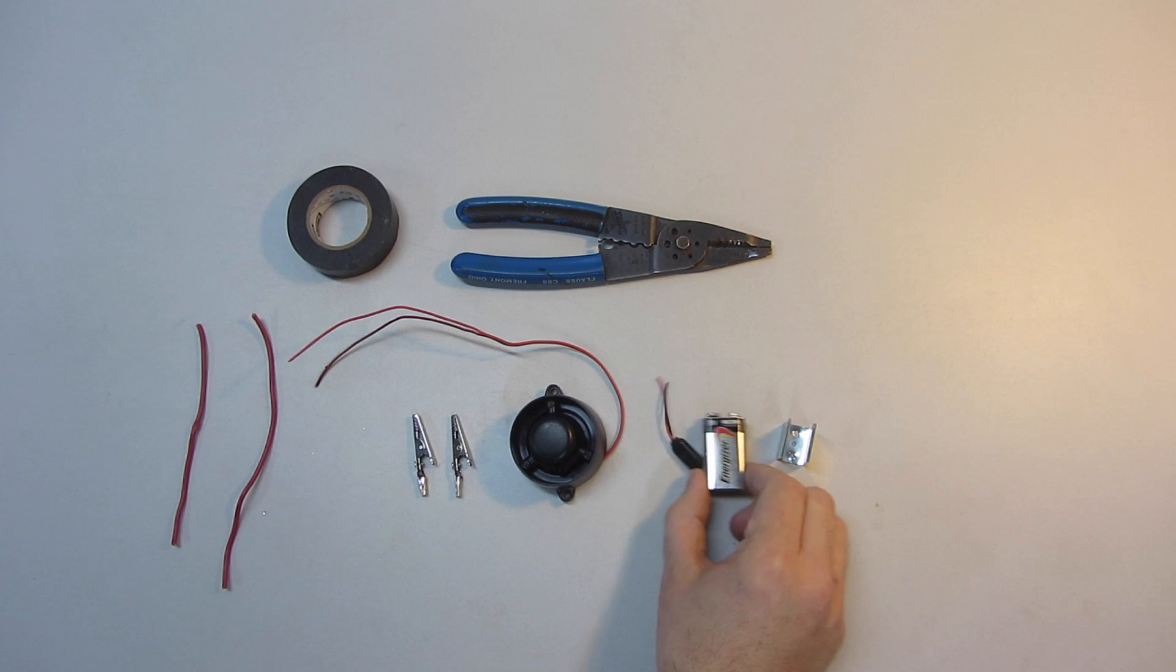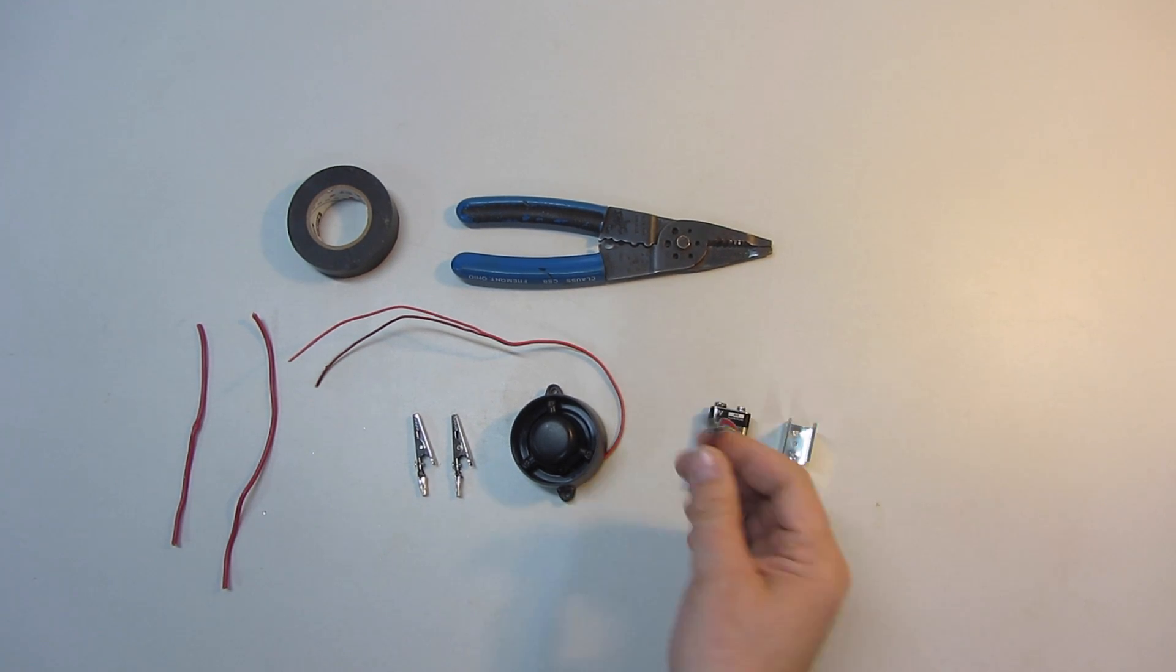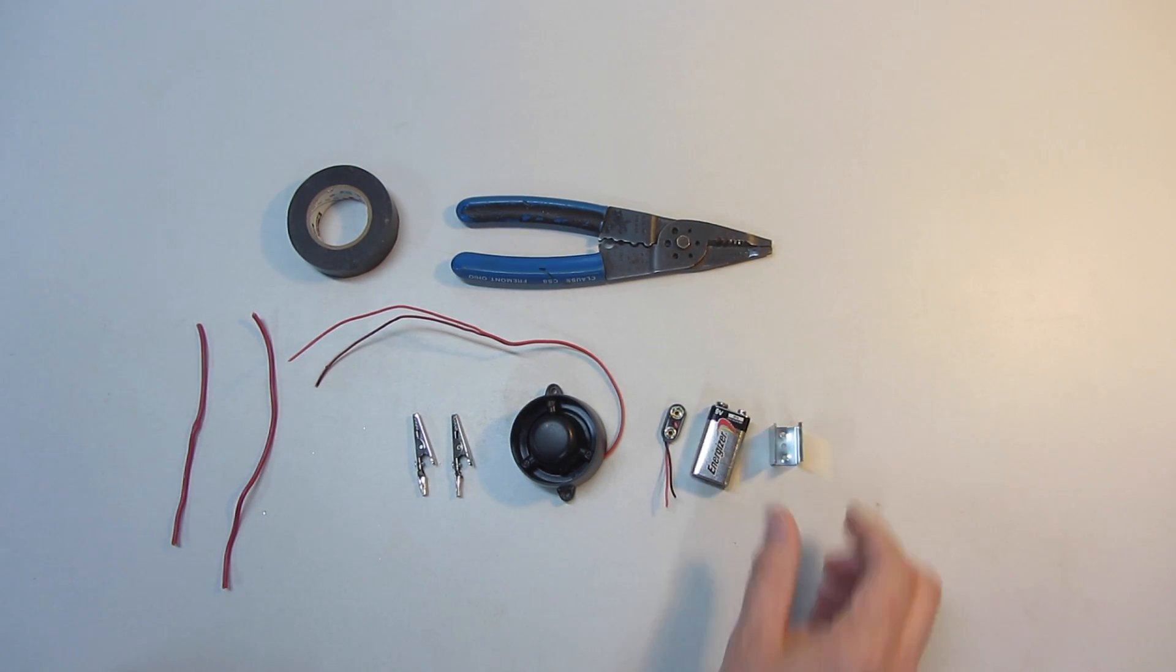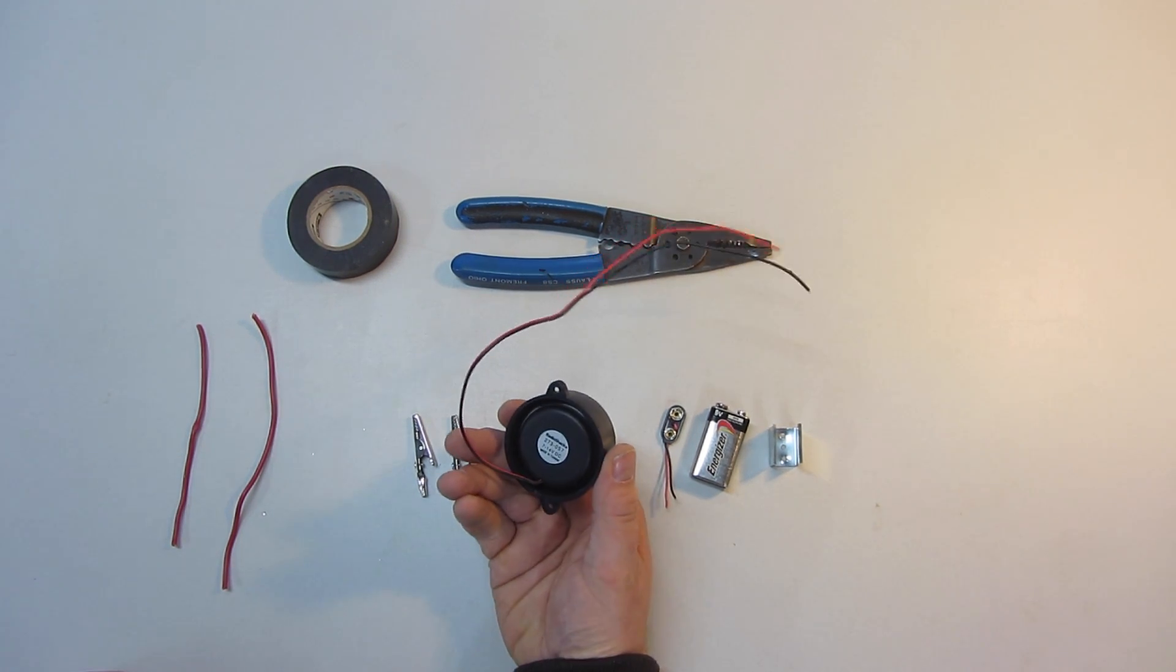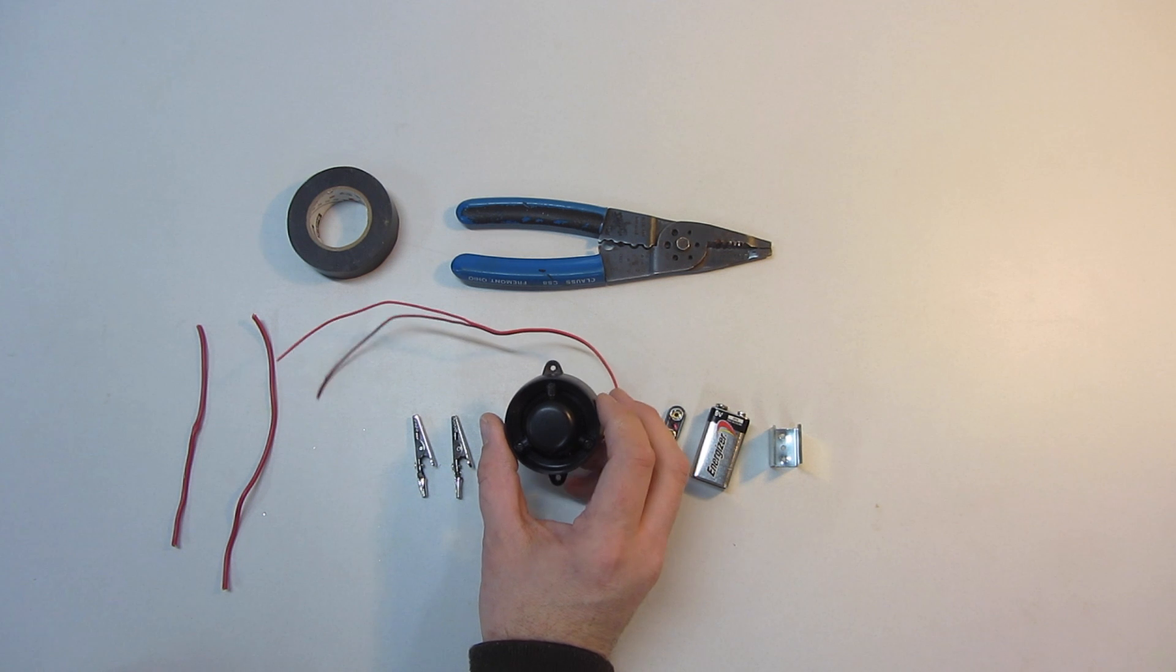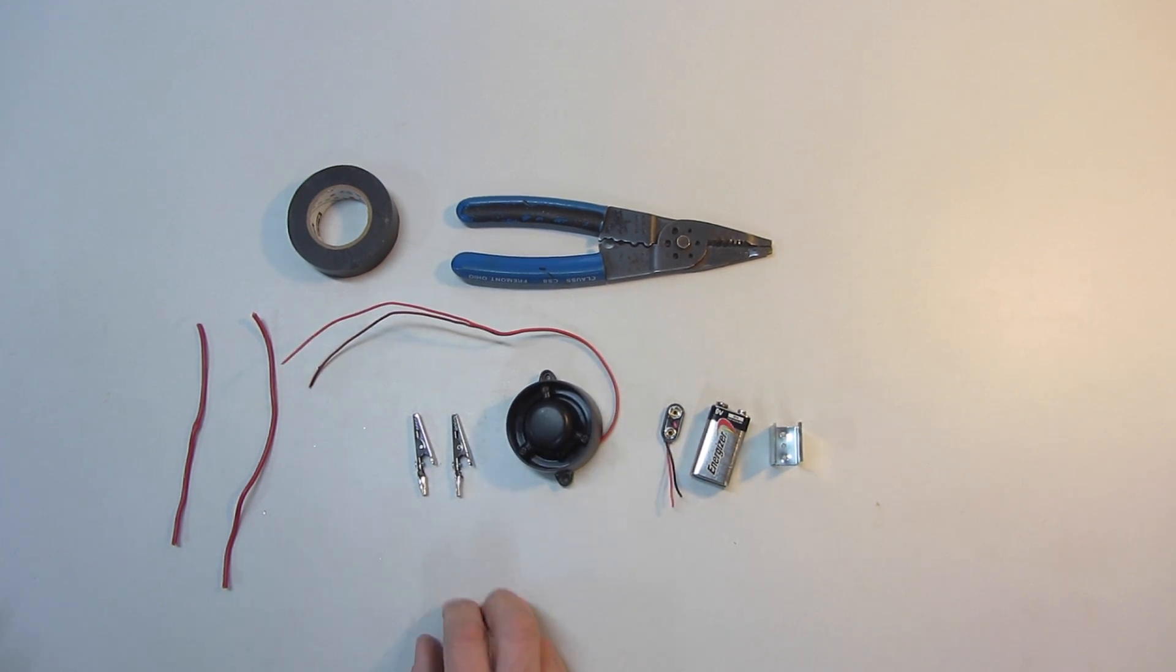So here's what you need. You need a 9-volt battery, battery terminal connector, and a battery holder. This is a buzzer I bought from Radio Shack. It is at least 100 decibels loud. It sounds more like an alarm. It's very high-pitched, very loud. These are two alligator clips.